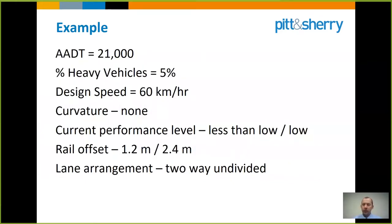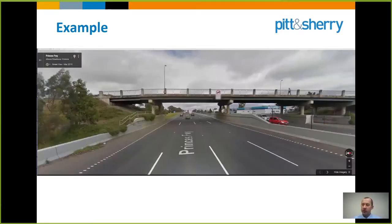The gradient is relatively flat. This is a road at Point Cook, just outside Melbourne, coming up over a freeway. You can go to VicRoads' website and retrieve the AADT figure and percent heavy vehicles. From looking up and down the road you can get the posted speed limit, and from satellite imagery you can assess the curvature. You can assess the barrier performance level visually, roughly measure the barrier offset from satellite imagery, and determine the lane arrangement. All this information can be gathered sitting at your desk — there's no excuse not to be doing this.